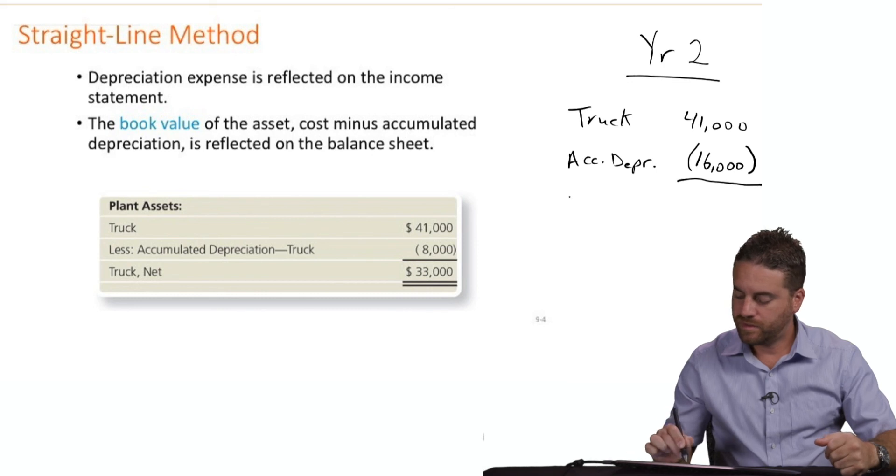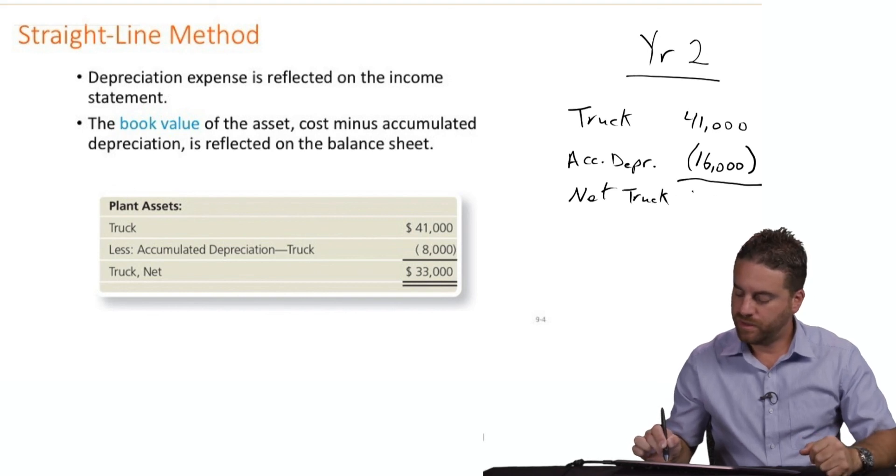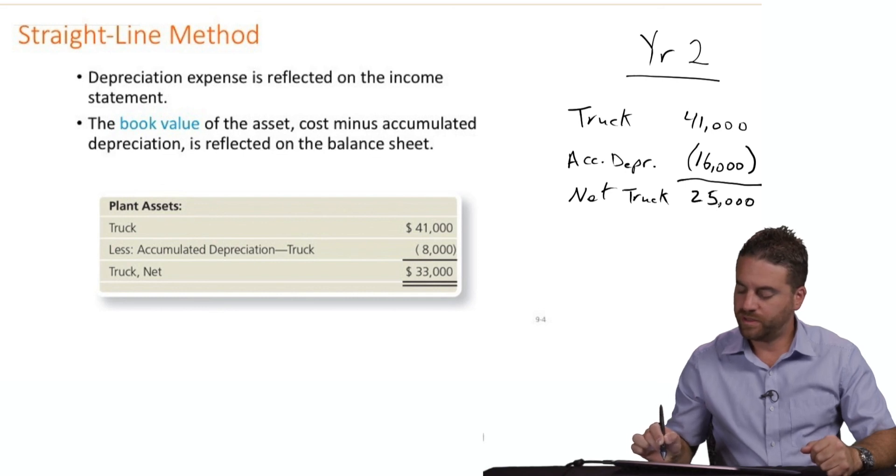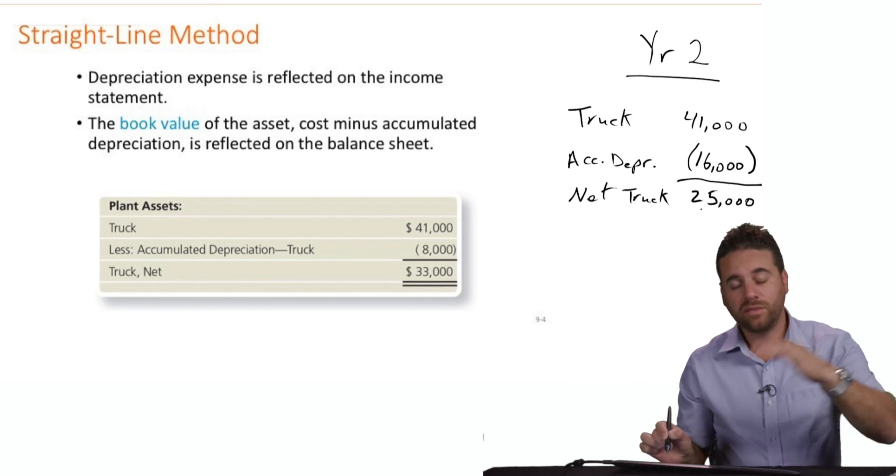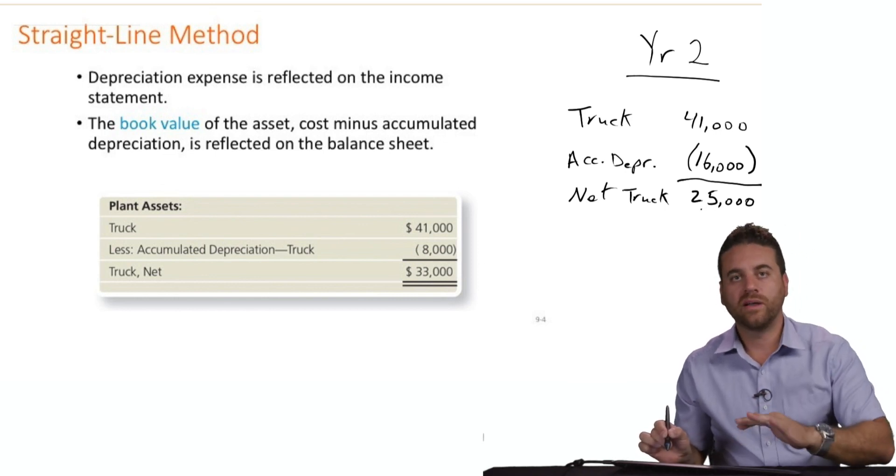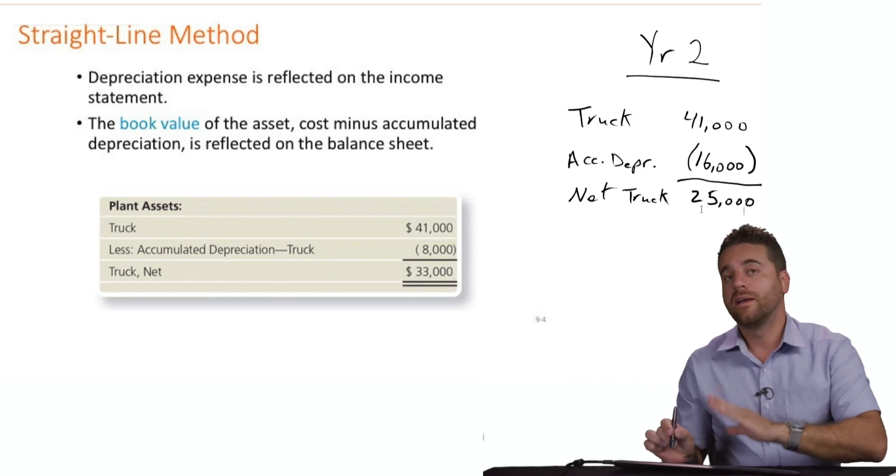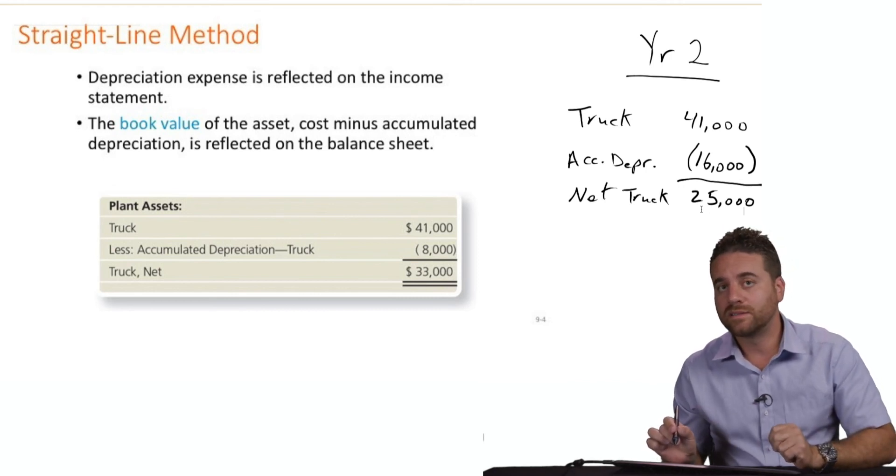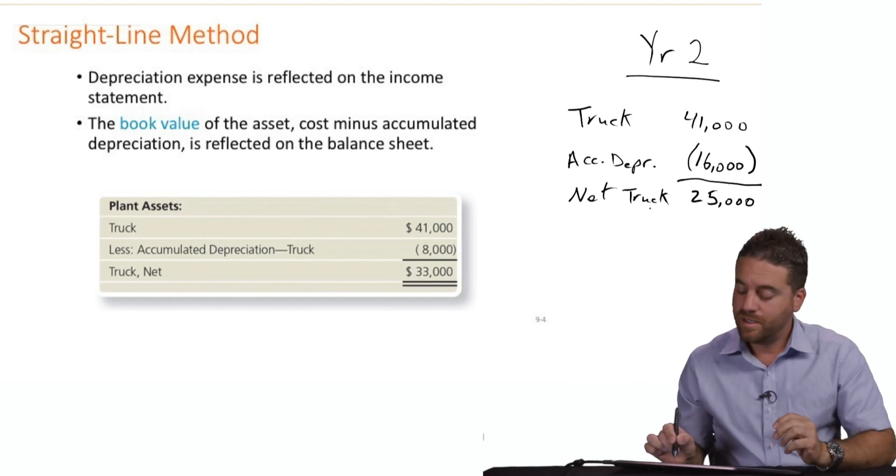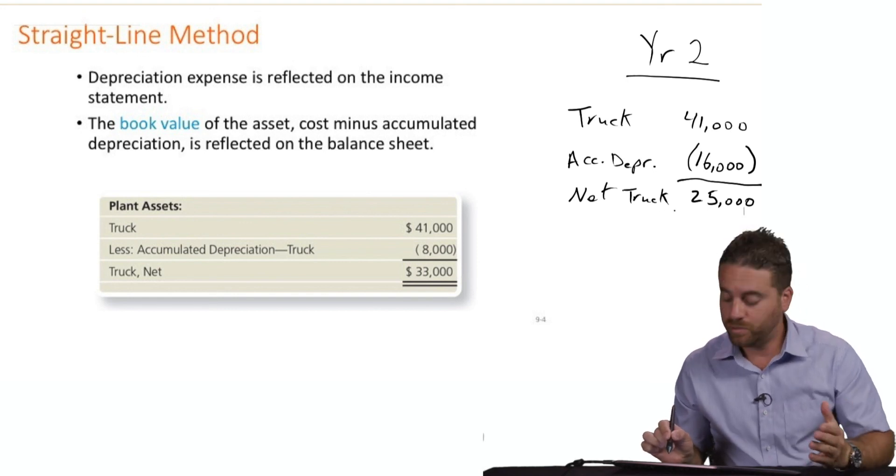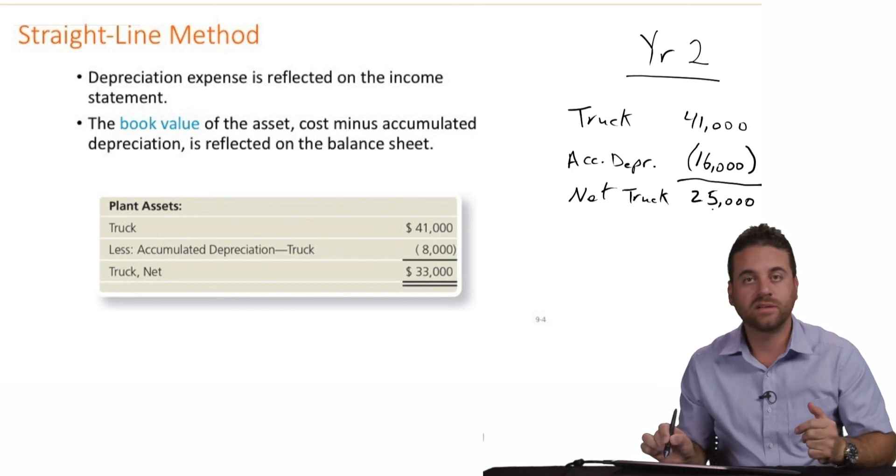Your net truck now is $25,000. So it went lower. It used to be $33,000, and now it's $25,000. Year three it will be even lower than the $25,000. Year four and five, it will go lower and lower until at the end of year five, you will end up with just $1,000 remaining value, or the net truck in other words, because the salvage value or the residual value at the end of the useful life is $1,000. So we should end up with just $1,000 here.